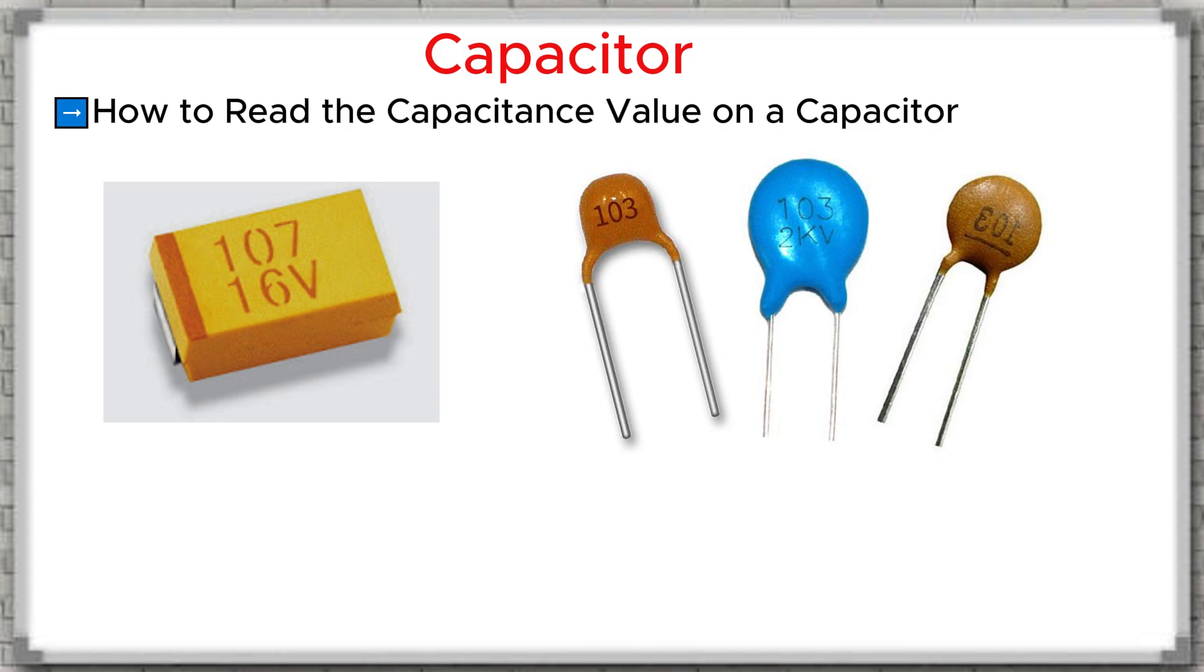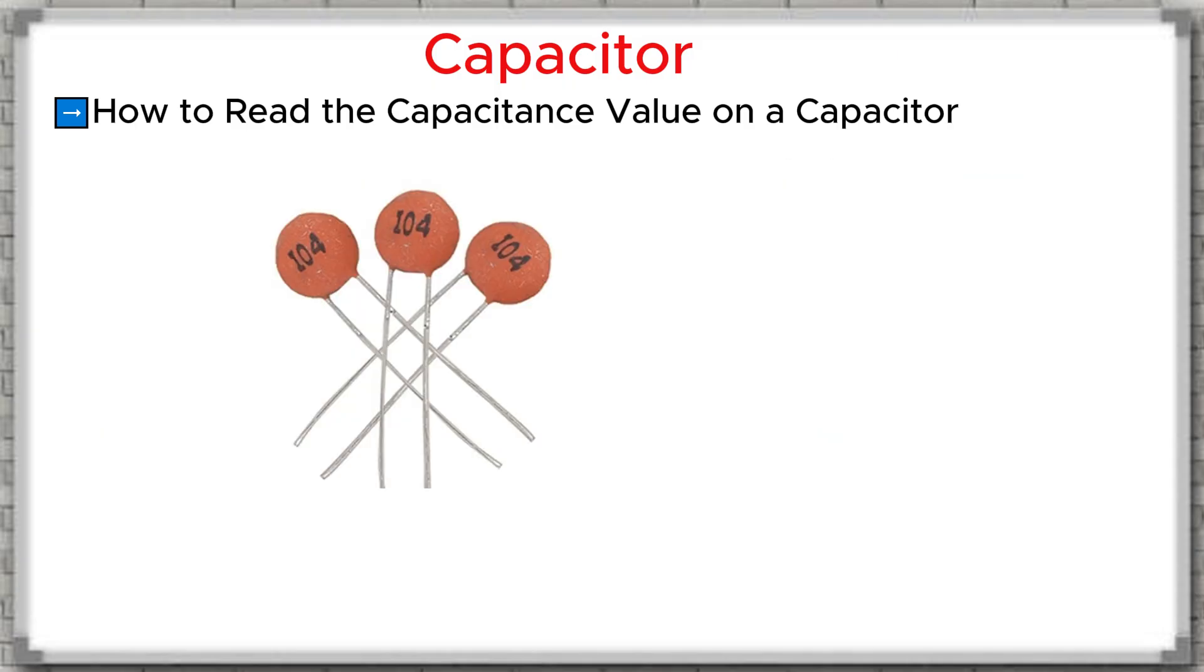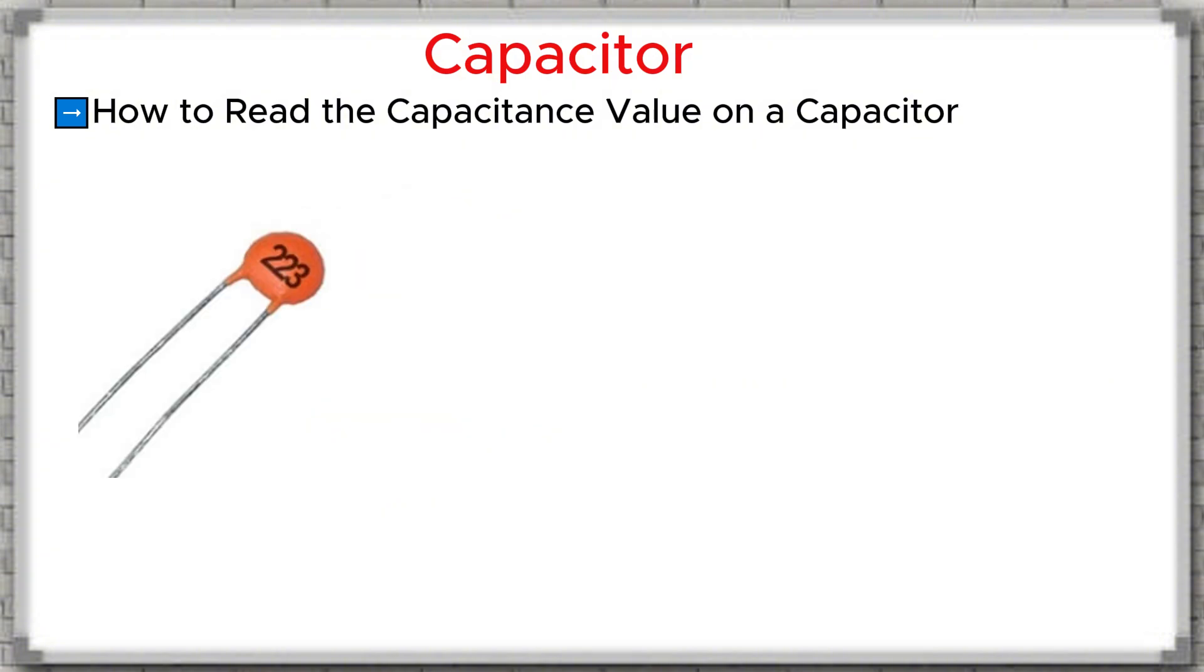For film capacitors, ceramic capacitors, and small SMD capacitors, the capacitance value is written as a code, usually three digits, or sometimes four digits, similar to how resistor values are coded. For a three-digit code, the first two digits are the base value and the third digit tells you how many zeros to add. For example, 104: 10 and 4 zeros = 100,000 picofarads, which is 100 nanofarads, or 0.1 microfarads. Another example, 223: 22 and 3 zeros = 22,000 picofarads, which is 22 nanofarads.